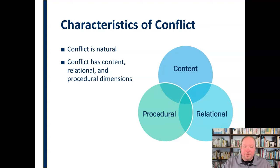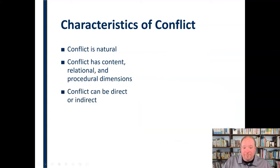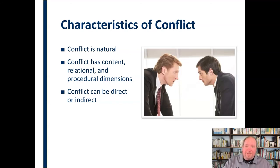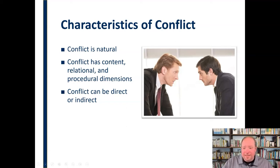All three of these things intersect, and that's where we want to focus our conflict for the most constructive outcome — considering the content, relational, and procedural dimensions throughout that conflict. We also need to know that conflict can be direct or indirect. Direct conflict means you're head-on with this person, everybody's well aware, and you're going at it in a competing type of way — the conflict can be aggressive. That's not necessarily a negative thing; it could be a positive or necessary thing.